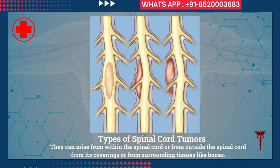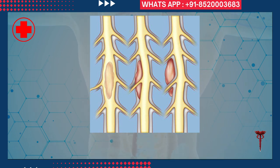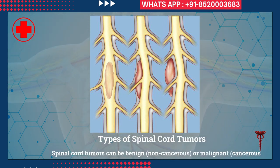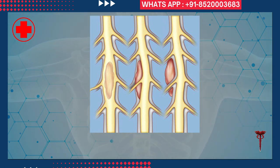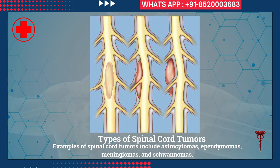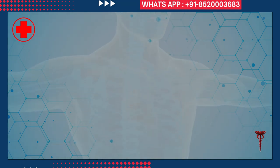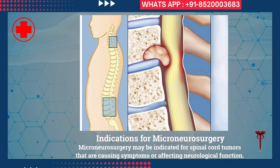Types of spinal cord tumors: they can arise from within the spinal cord or from outside the spinal cord, from its coverings or from surrounding tissues like bones. Spinal cord tumors can be benign (non-cancerous) or malignant (cancerous). Examples of spinal cord tumors include astrocytomas, ependymomas, meningiomas, and schwannomas.